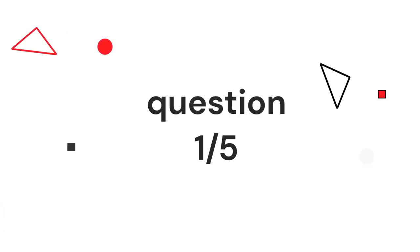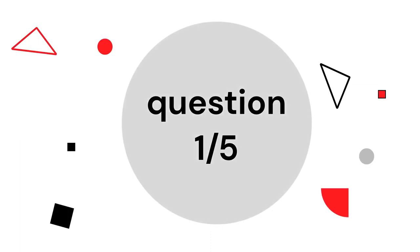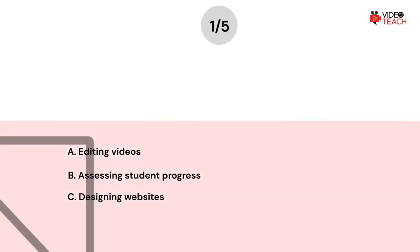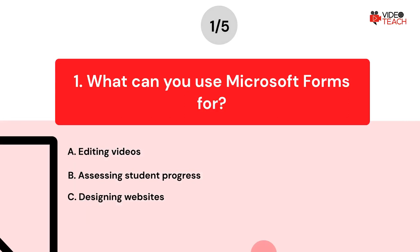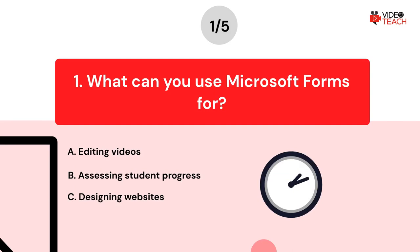Question number one. What can you use Microsoft Forms for? Option A: Editing videos. Option B: Assessing student progress. Option C: Designing websites. Now you have about 15 seconds to think about your answer.